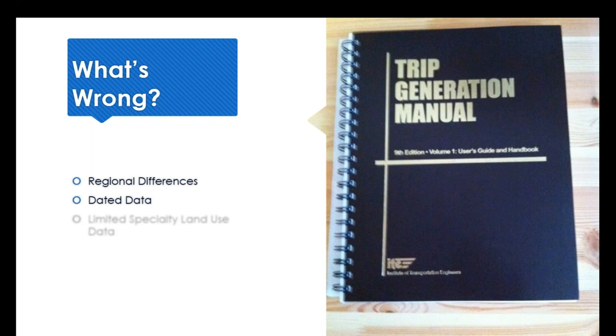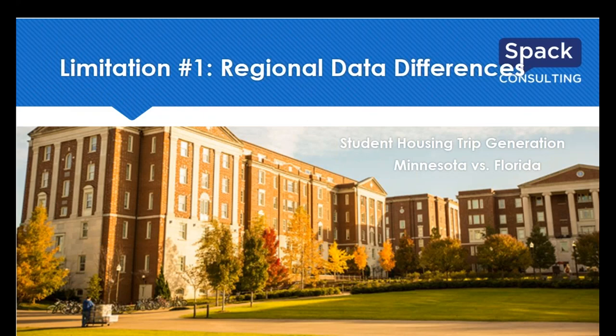There are a few key problems with the ITE manual: regional differences, old data, and limited applicability. On regional differences — the ITE is a national handbook with data from all over the country, but it's a big country and data can vary significantly throughout. For example, we collected trip generation data at student housing in Minnesota and also received data from student housing in Florida.